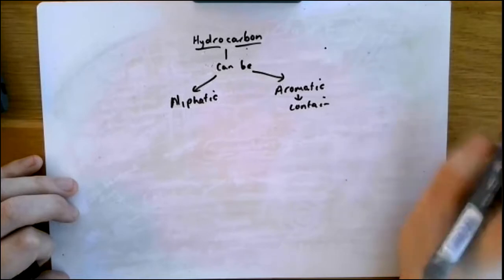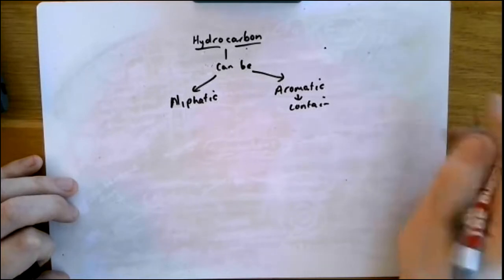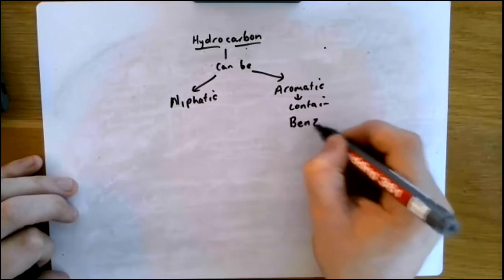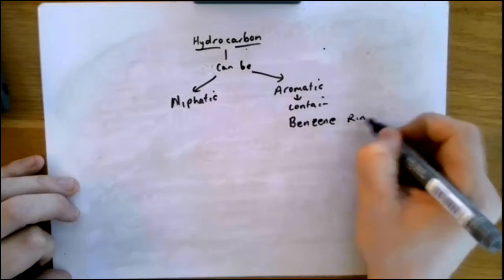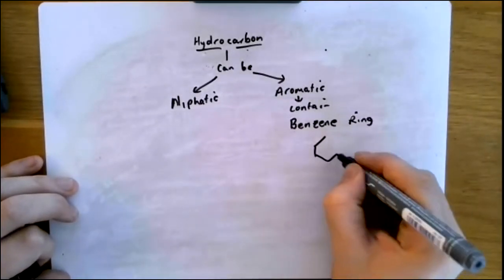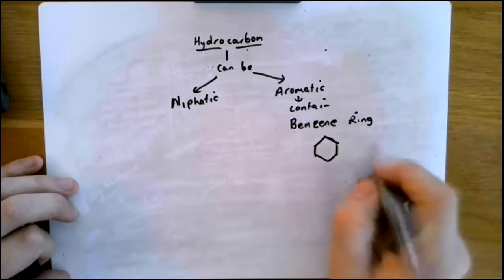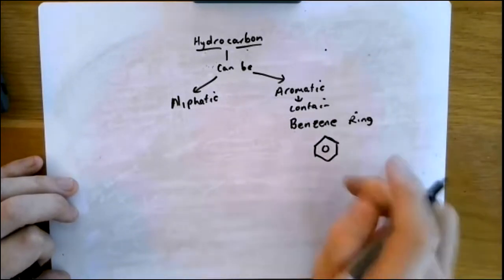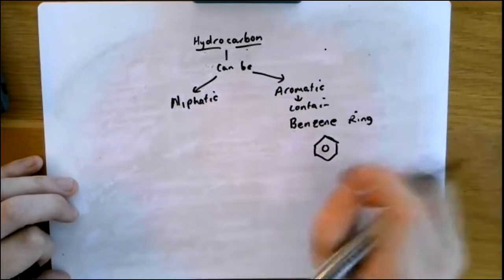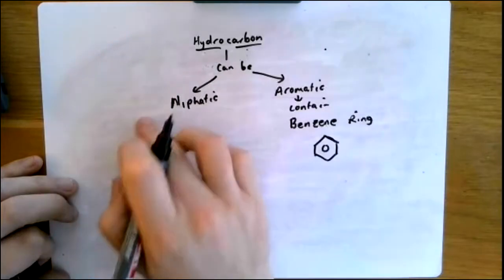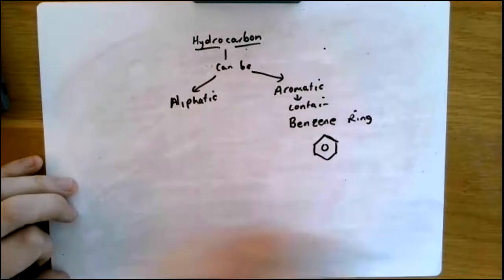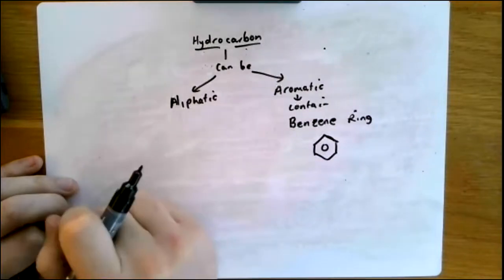You should only be watching this video now if you have paused it and tried to draw a benzene ring. A benzene ring looks like this — it's a hexagon with a circle in the middle, and each point on the hexagon is a carbon atom. Aliphatic hydrocarbons are compounds that do not contain a benzene ring.